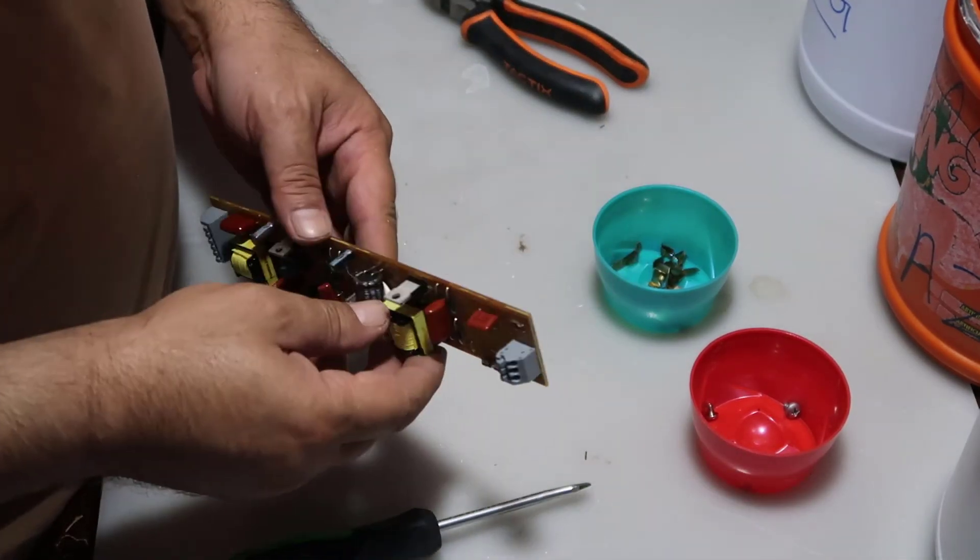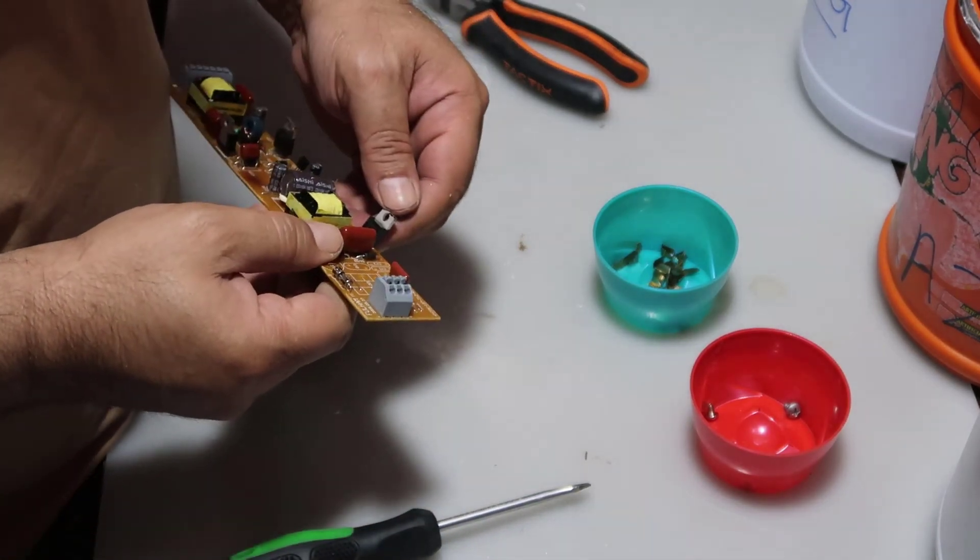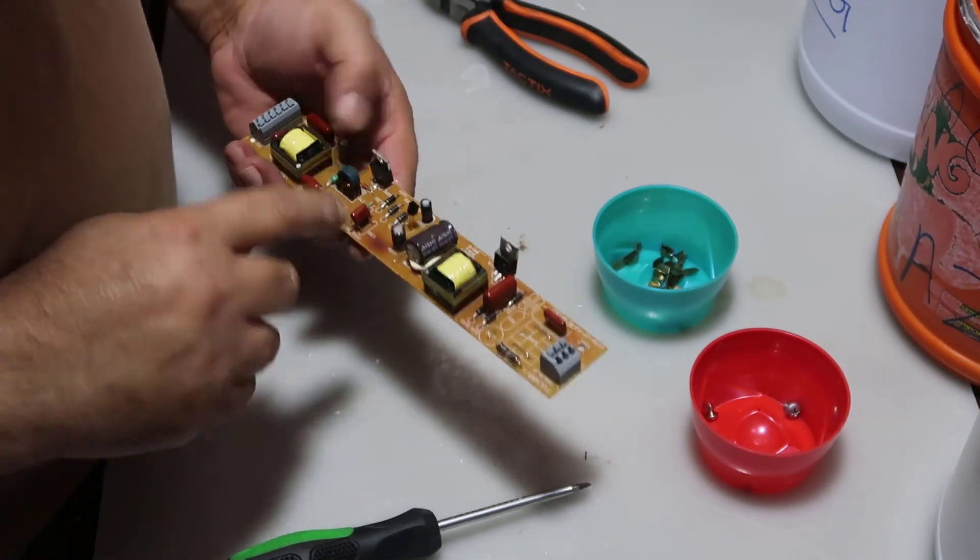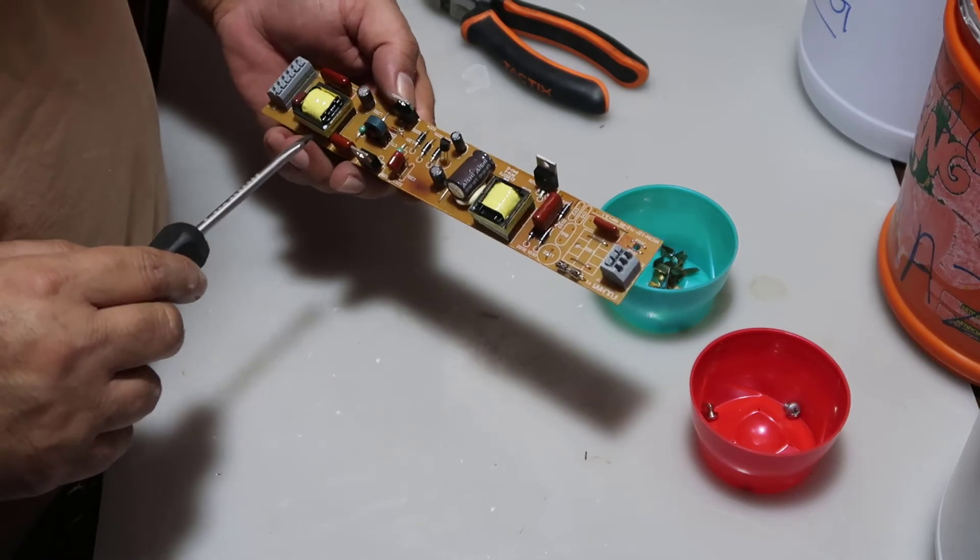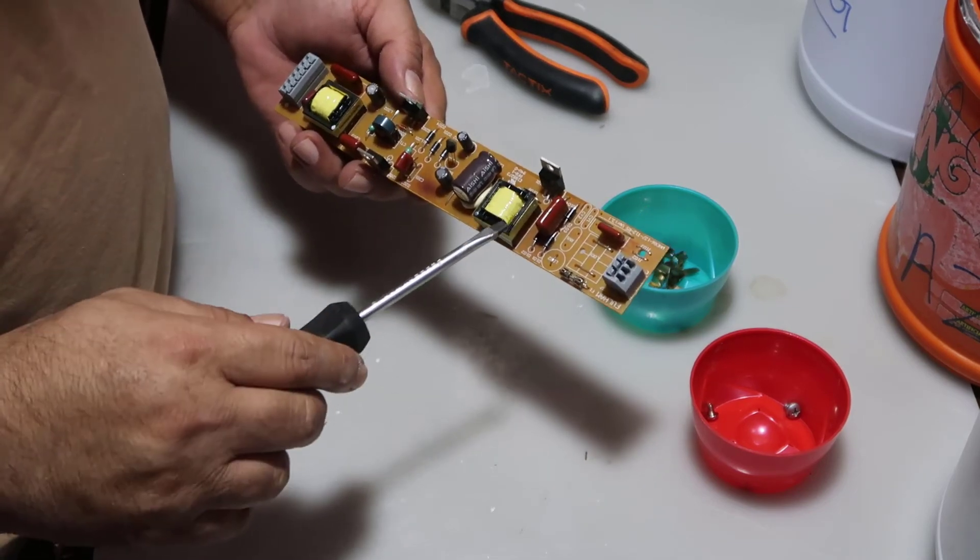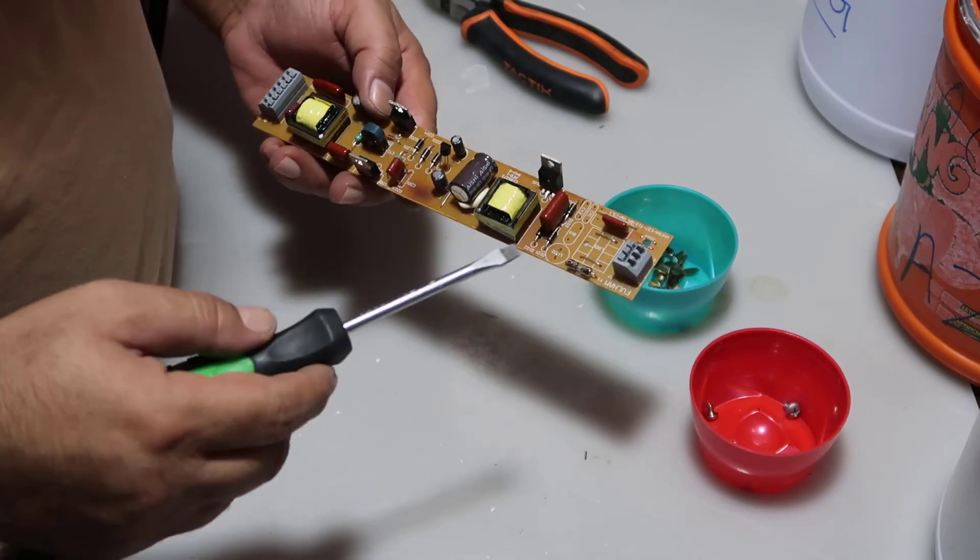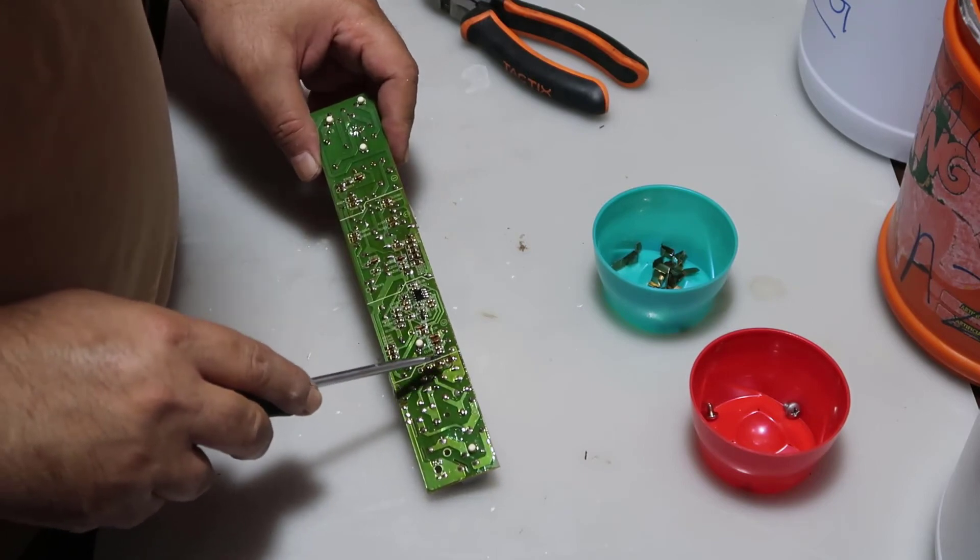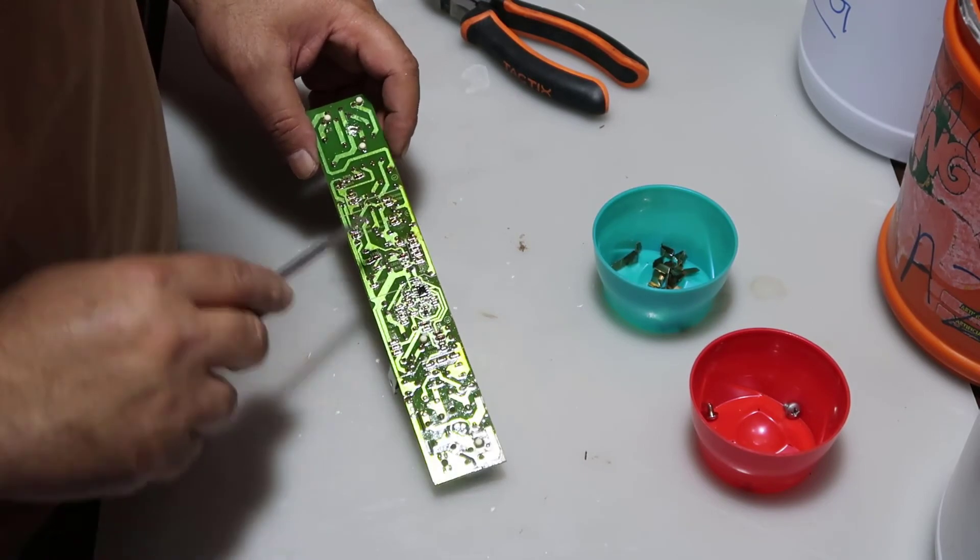And here, as we can see, we have voltage regulator. That's good, it contains copper. So we have one, two, three voltage regulators, one, two transformers. And we can get MLCC and resistors from the back of the board. And that's all.